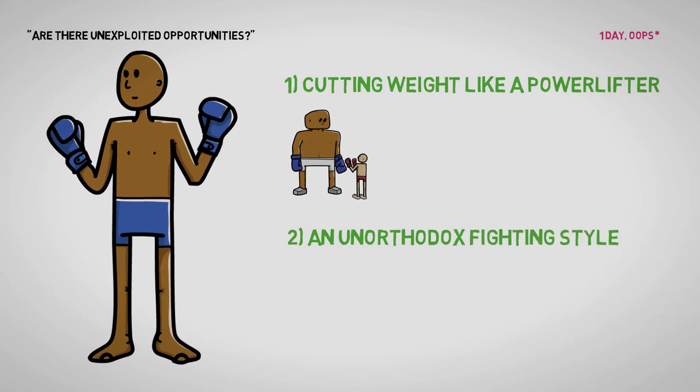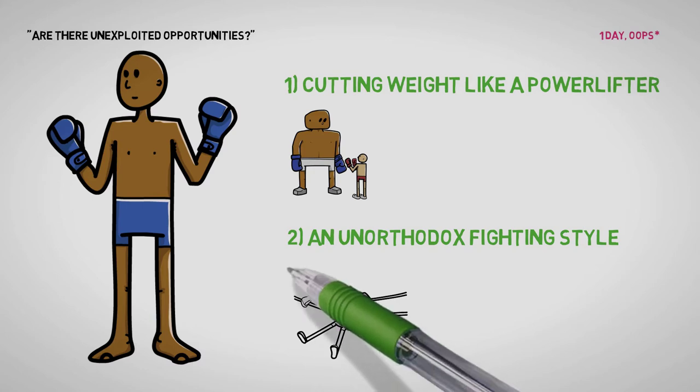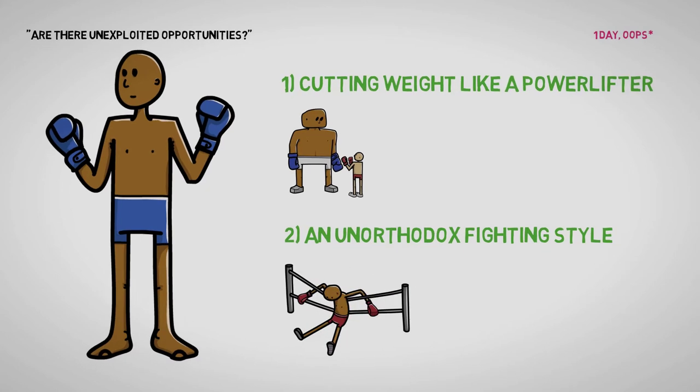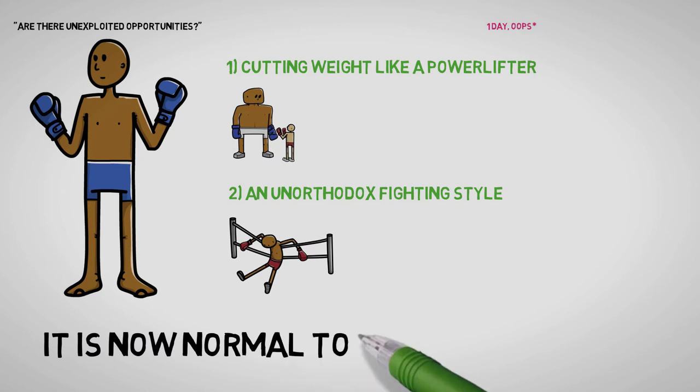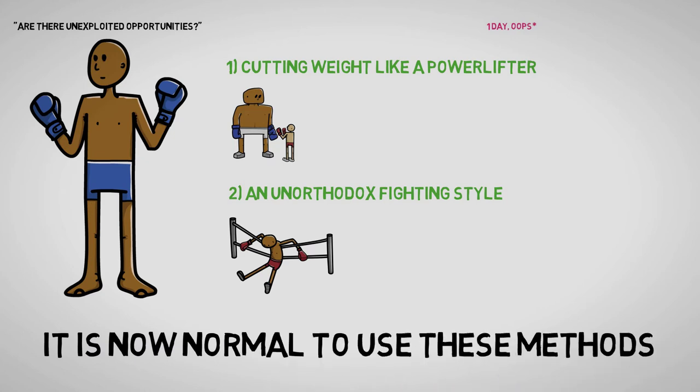Two: An unorthodox fighting style. With his weight advantage, he pushed every single one of his opponents off the ring, ending up winning every fight with a technical knockout. Ever since he became the champion, it is now normal to use these once unorthodox methods.